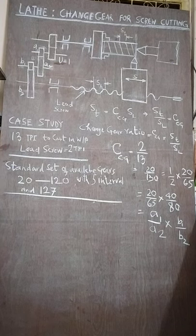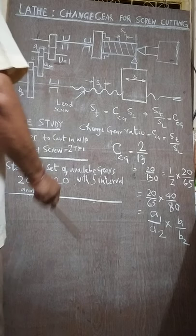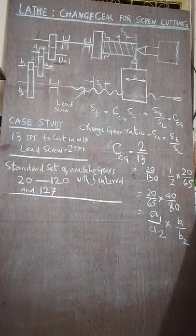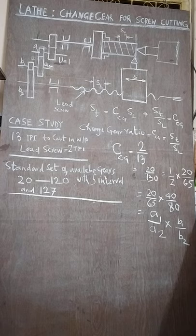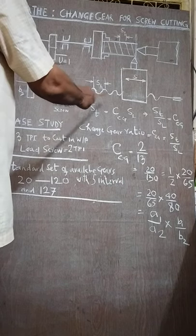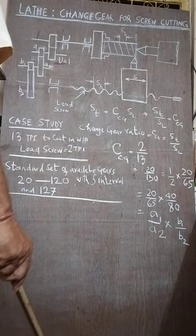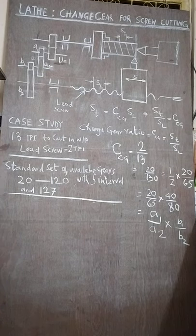Normally two types of screw we cut: one is Whitworth or metric size. And in the machine also, in the lead screw there is a screw. The lead screw is either metric or Whitworth.